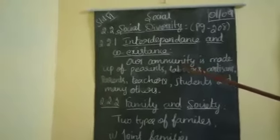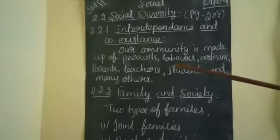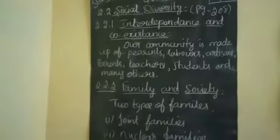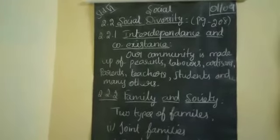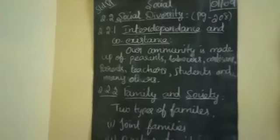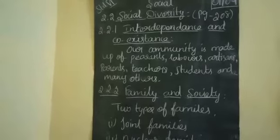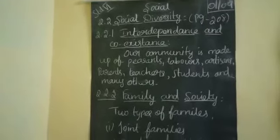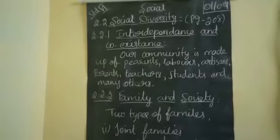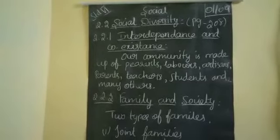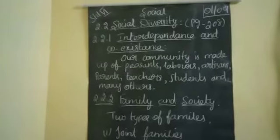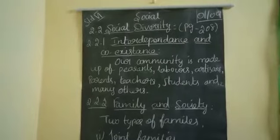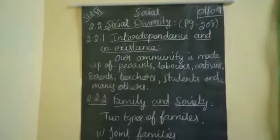A community is a place where people live together with a common interest or heritage. In our community, most of the people live together with a common interest. They are willing to live together. That is why it is said that people live together with a common interest or heritage.